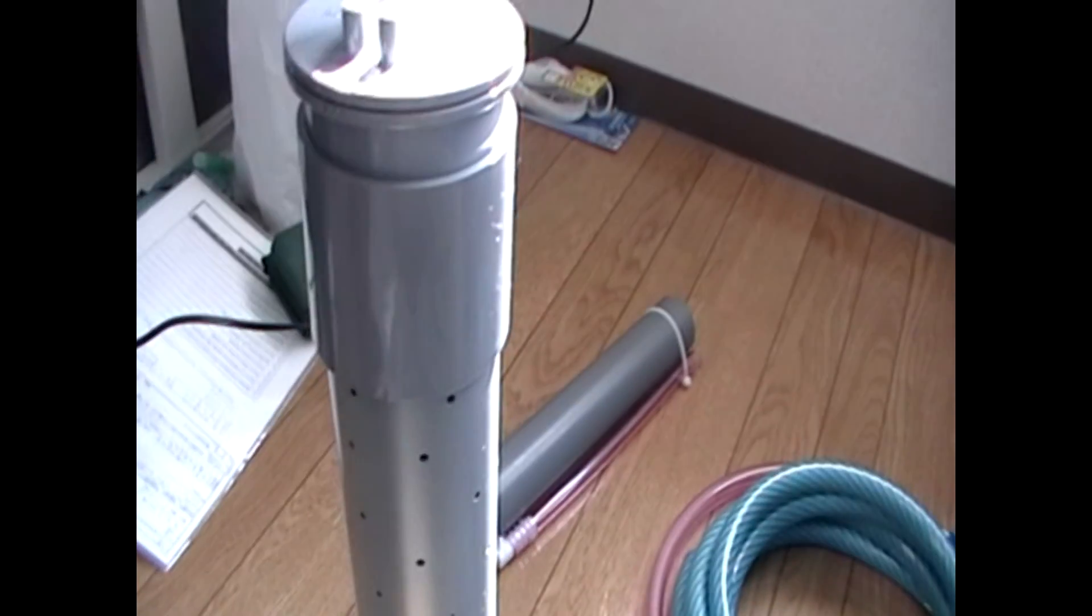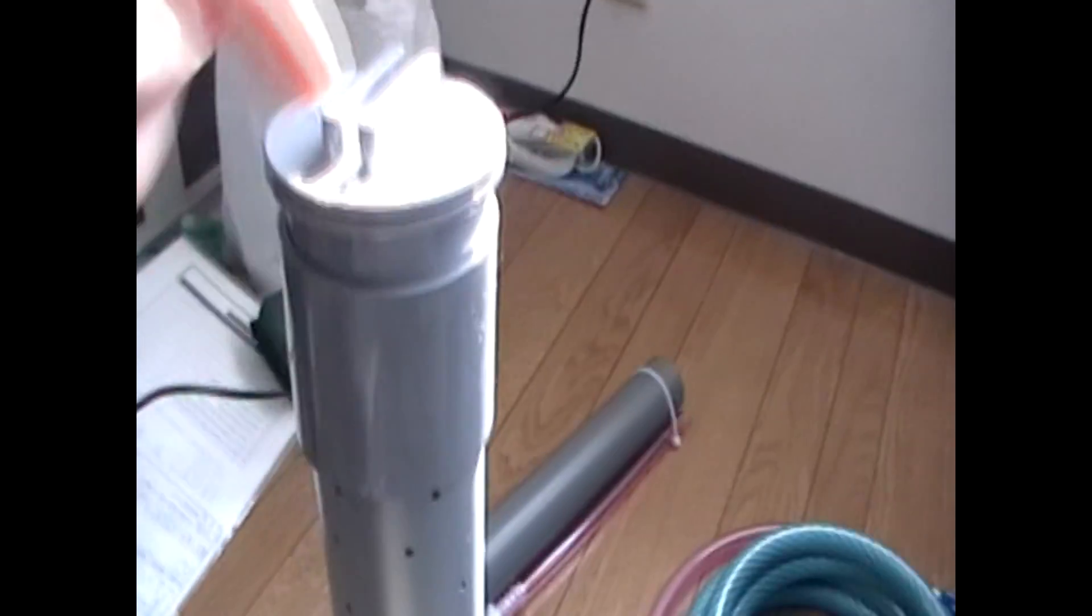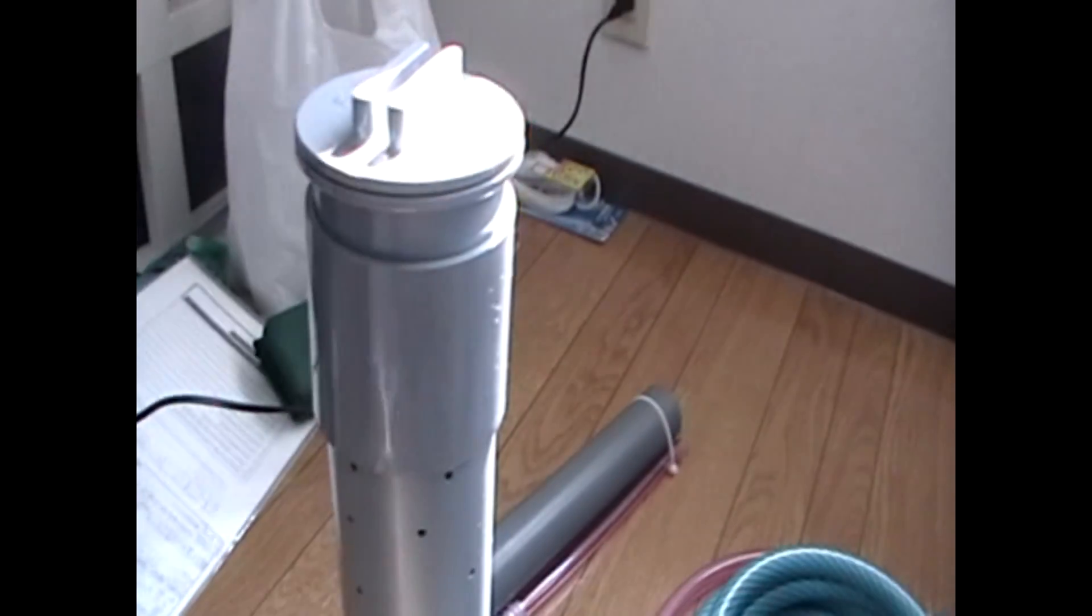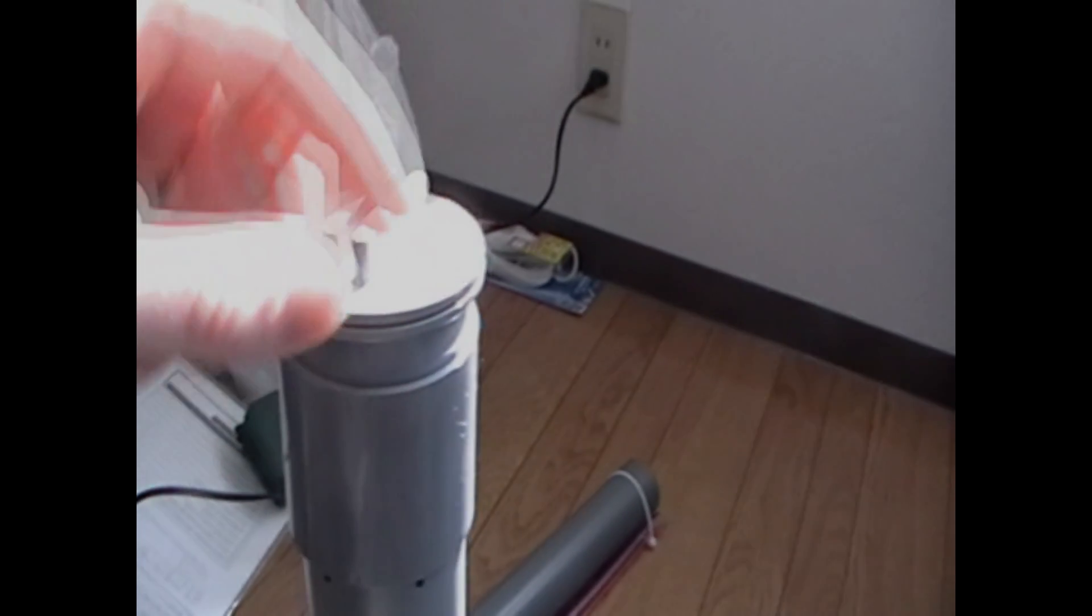The bell siphon is really the pieces that sit inside here. This is just a guard to keep the gravel out or the media. That's why there's lots of holes in it. Yeah, you want a big size so you can get your hand in there.